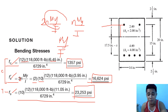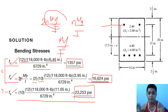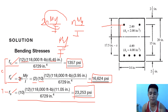The only difference with a doubly reinforced beam is that we add another part in our transformed area for the compression steel, taken as (2n − 1)·A's — where the prime indicates compression. I hope you learned something today. Don't forget to subscribe and share my videos. Thank you so much!